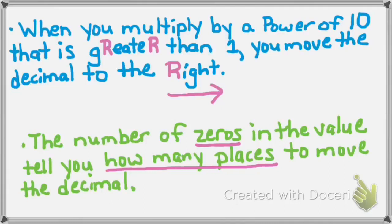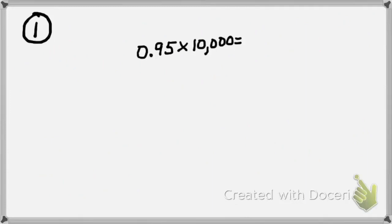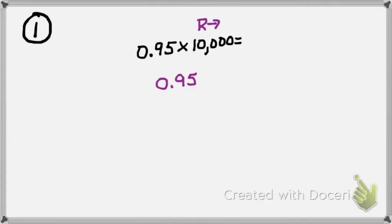Let's look at some examples. Example number 1 says 0 and 95 hundredths times 10,000. I see a power of 10 — 10,000 has a 1 with zeros, that's my power of 10. So I'm going to write down the number that's not the power of 10: 0.95. I'll look at my power of 10 number, which is 10,000. That's a whole number, so it's greater than 1, and greater means I move my decimal to the right. How many places? That depends on the number of zeros.